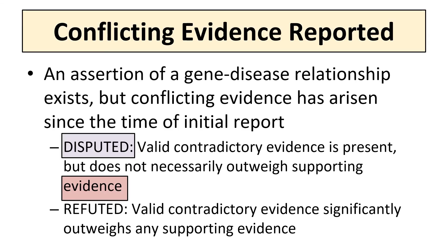For genes with conflicting evidence reported, an assertion of a gene disease association exists, but conflicting evidence for the role of this gene in disease has arisen since the time of the initial report indicating a gene disease association. Depending on the quality and quantity of evidence disputing the association, the gene disease association may be further defined by the following two subcategories.